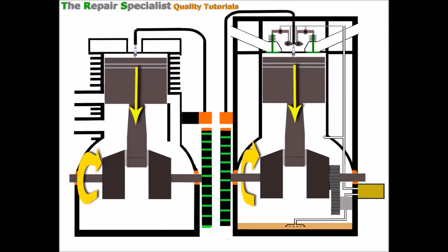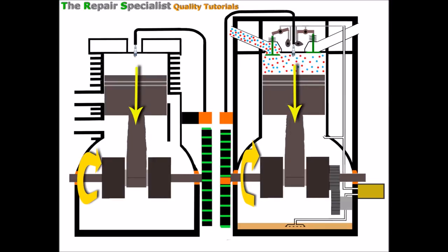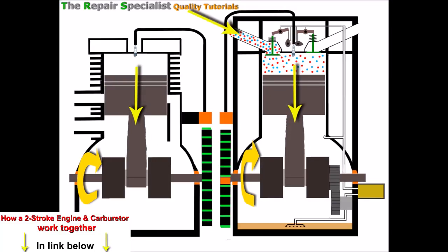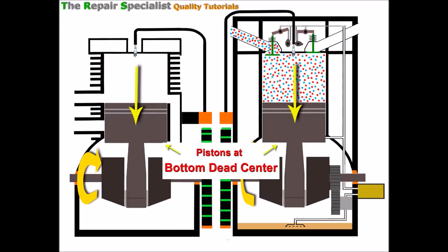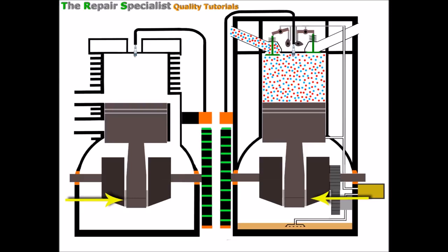We've turned the key or pulled the pull cord and the engines are cranking. Both pistons start to lower and immediately we can see on the four-stroke the piston has drawn in air and fuel above it. The opening of the inlet valve has timed perfectly with the induction of the air and fuel — referred to as the induction stroke, the stroke meaning the downward stroke of the piston. There's a lot less activity here in the two-stroke; there's no air and fuel coming in yet.